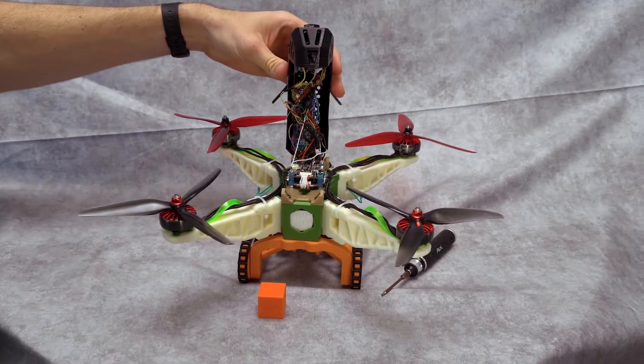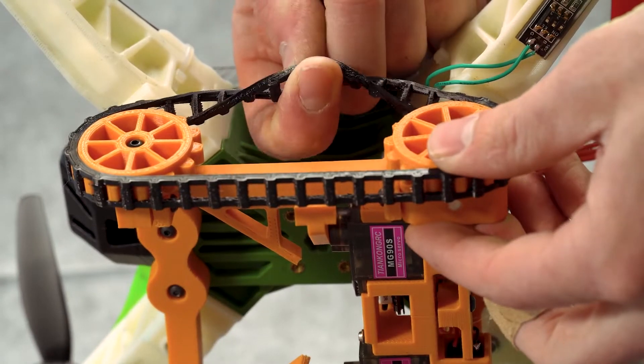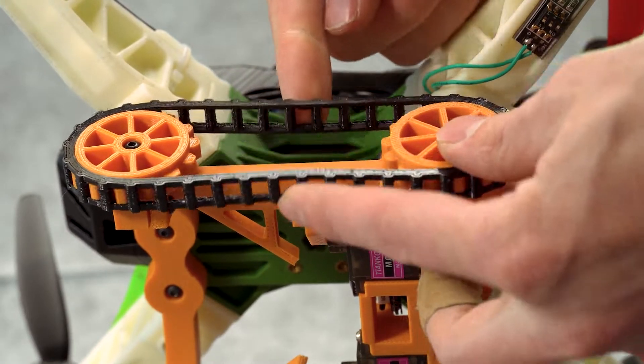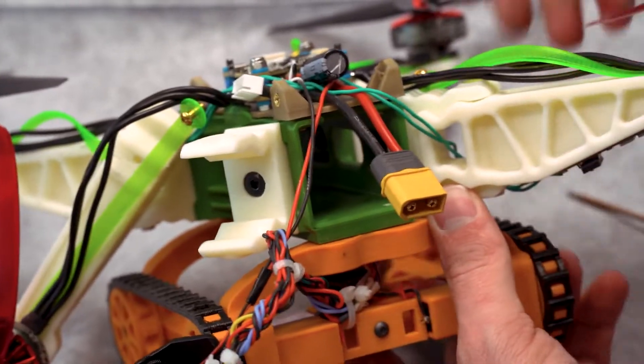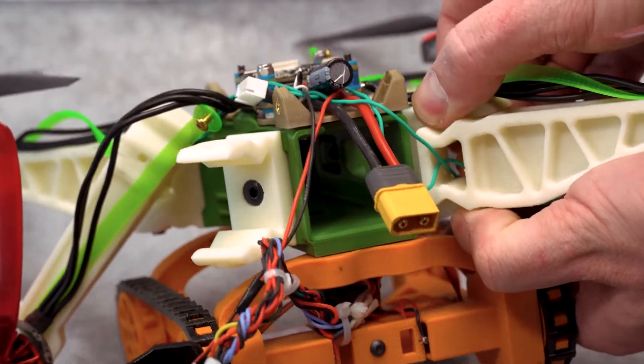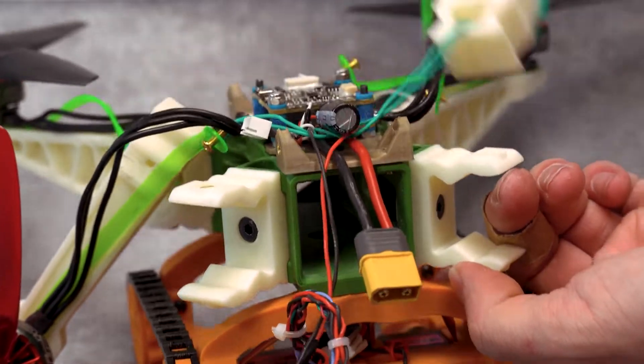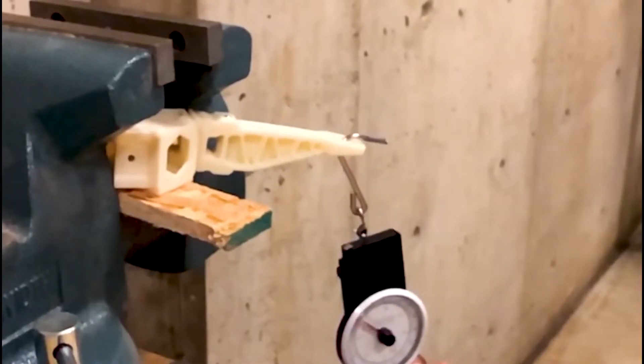ABS was used for rigid mounting points, and flexible TPU was used for vibration isolation and impact resistance. Print layer orientation was used to build strength in the body, while print density ensured breakaway parts would work correctly.